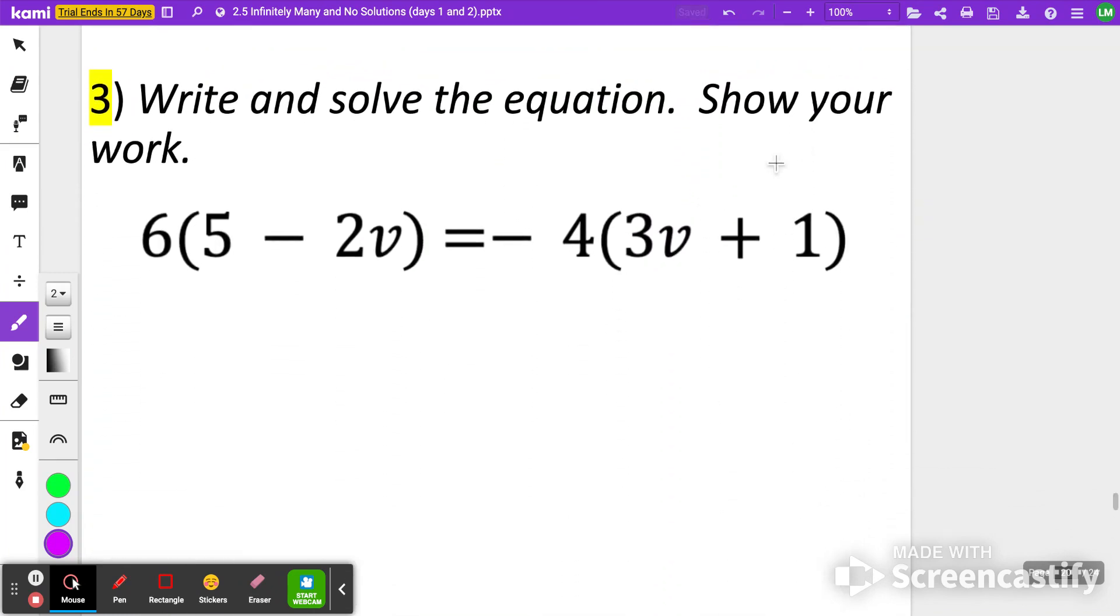Here's number three. Again, let's pause the video. Try it on your own. When you're done, click play to check your work. All right. First thing you hopefully did was distribute on the left side. 6 times 5 is 30 minus 12v because that's 6 times a negative 2 equals negative 4 times 3v is negative 12v. And then negative 4 times 1 is a negative 4.